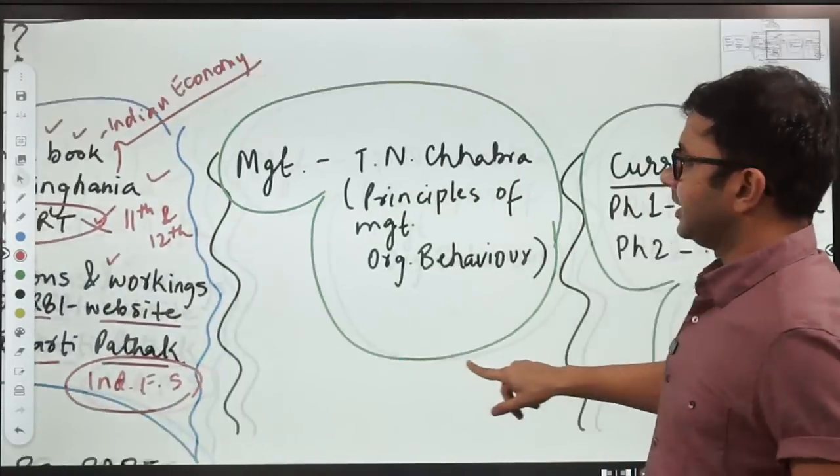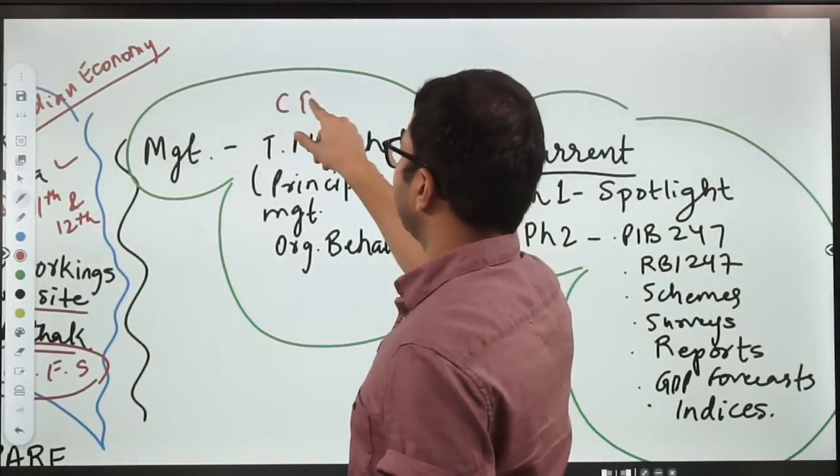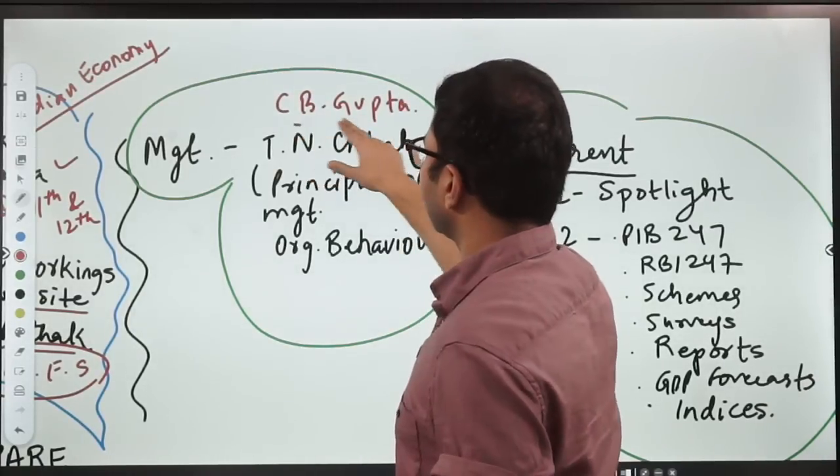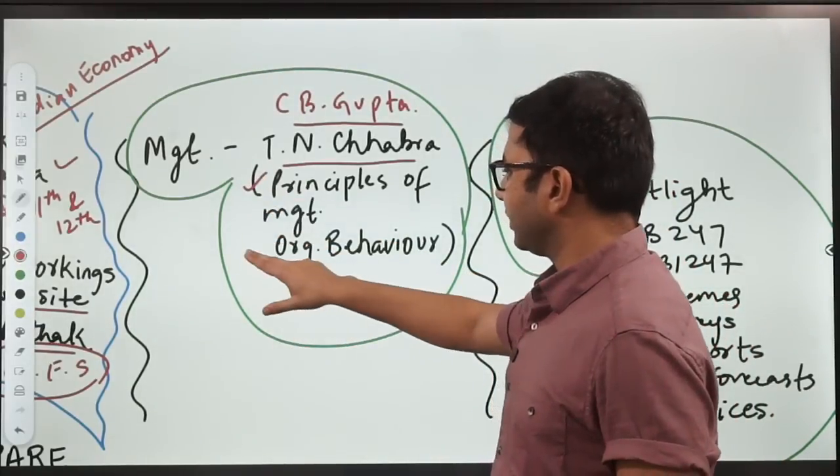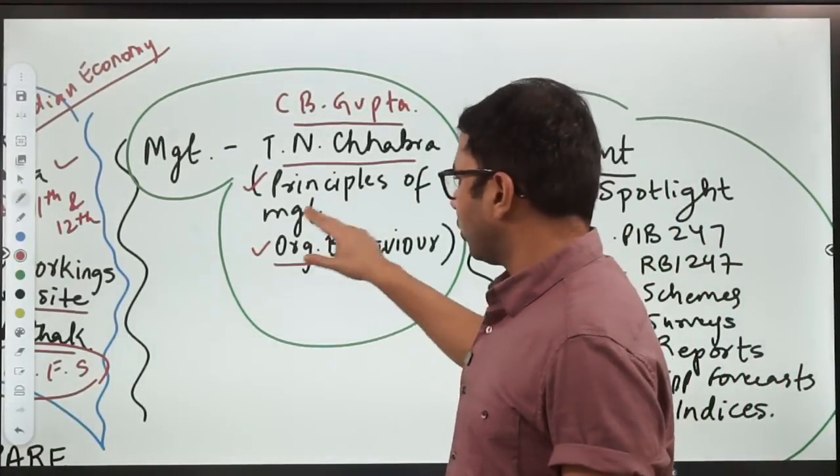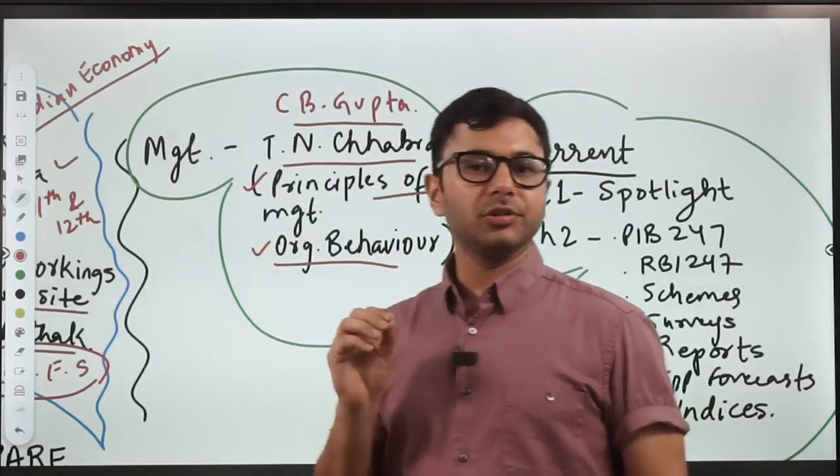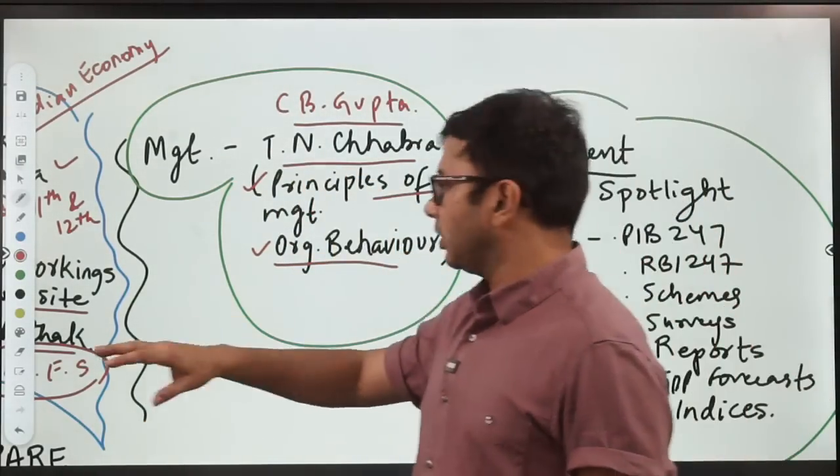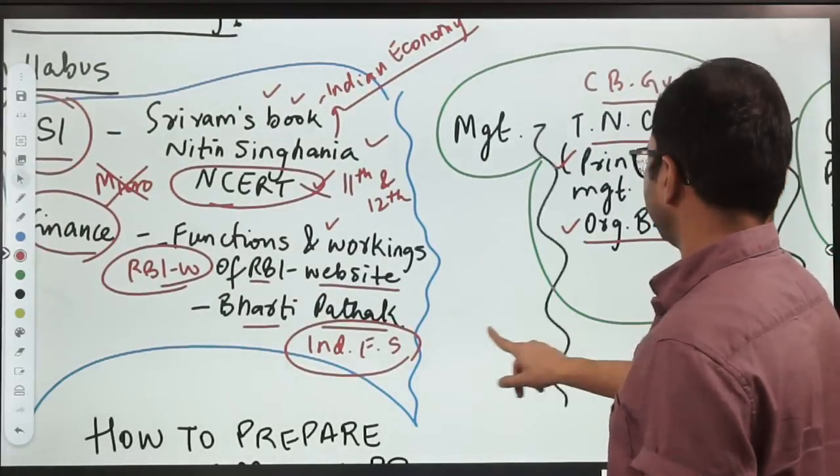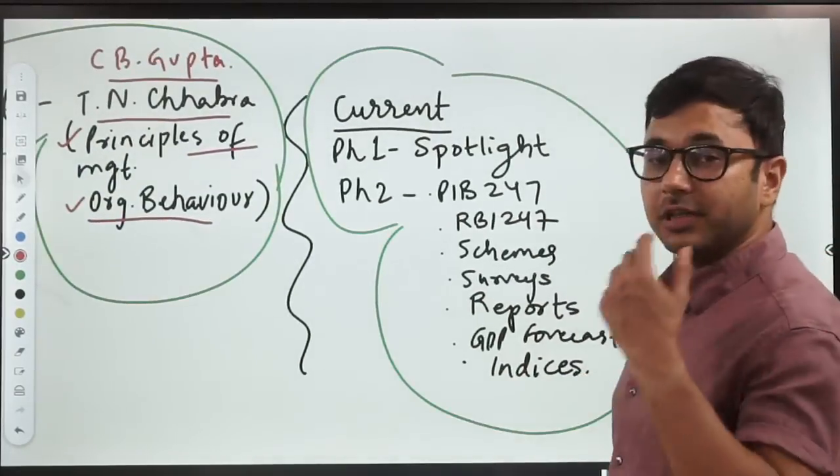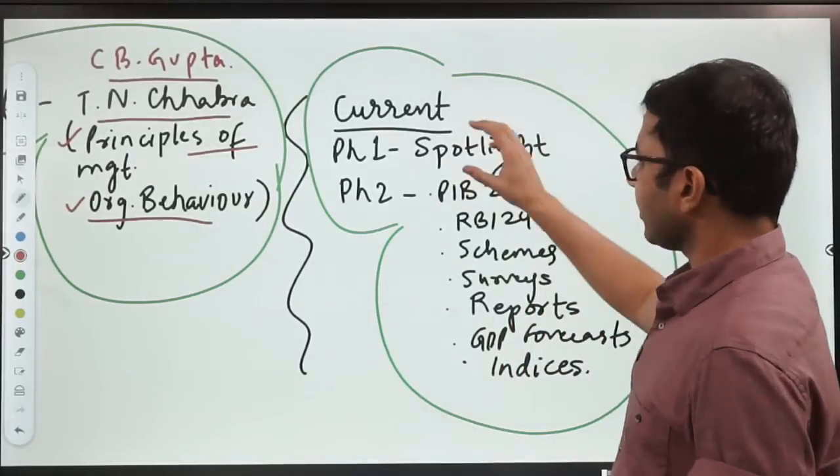Then comes management. In management you have a lot of authors, for example CB Gupta, DN Chhabra, but I would recommend any one of these two. There are two books specifically: number one, Principles of Management, and number two, Organization Behavior. Please buy both the books, they are relevant and strictly as per the syllabus of RBI examination. Now let's come to the current affairs first and then we'll come to phase one.